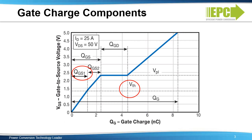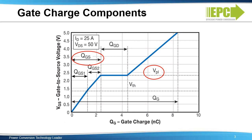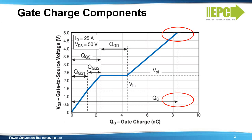QGS1 is the charge required to increase the gate voltage to the threshold voltage of the device. QGS2 is the charge required to commutate the device current. QGS is the charge required to increase gate voltage from zero to the plateau voltage, at which point the device enters the linear region. The total gate charge that must be supplied to increase the gate-to-source voltage to the desired voltage is also shown. In this example, just above eight nanocoulombs of charge is needed to bring the gate voltage from zero to five volts, ensuring the device is fully turned on.